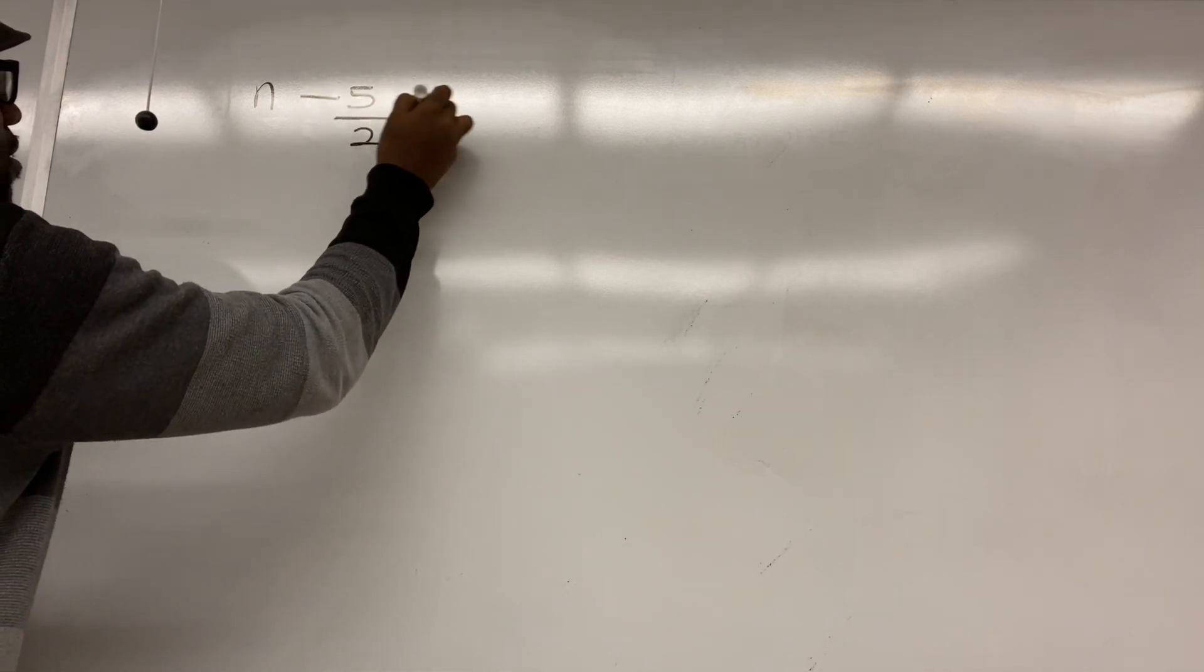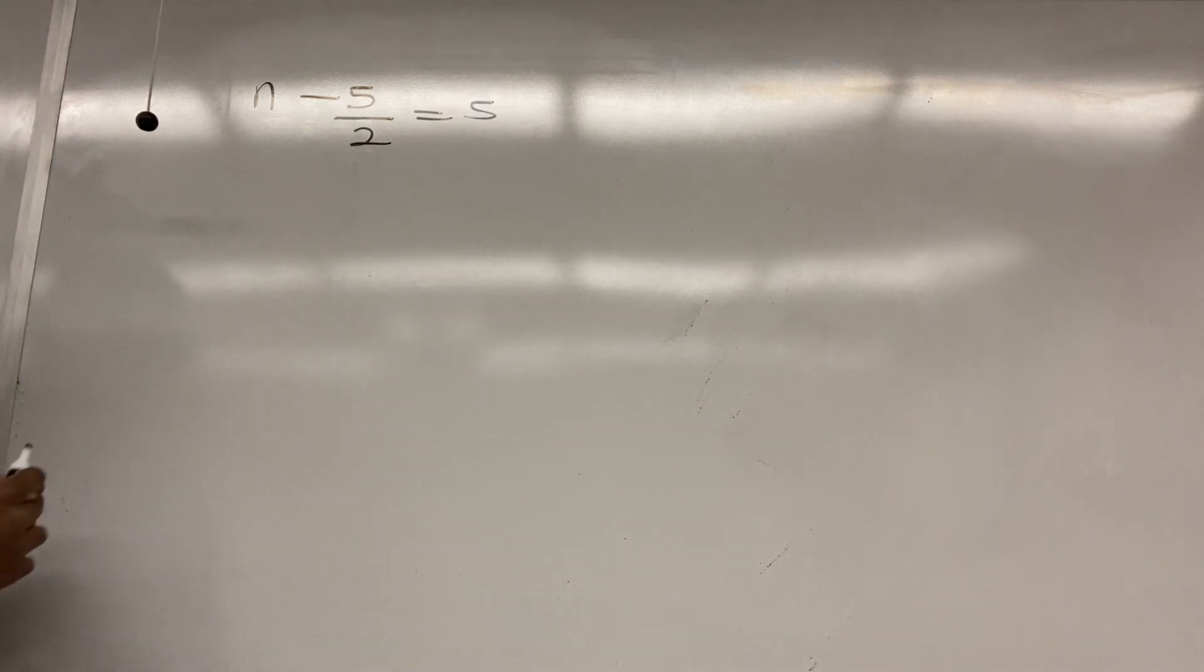Wait, n? n minus 5 divided by 2 equals 5. Yeah, this is it right. This? Yes. Alright. So we found the right n. It's simple.